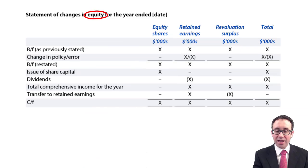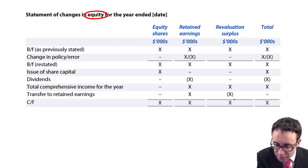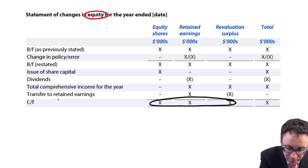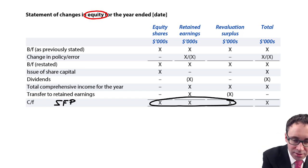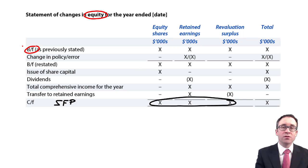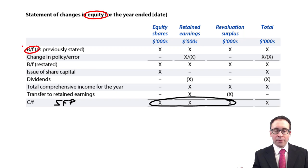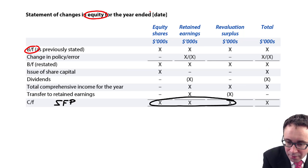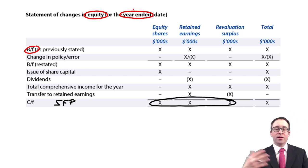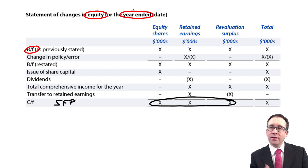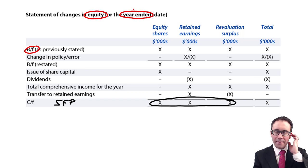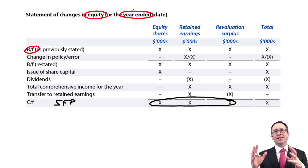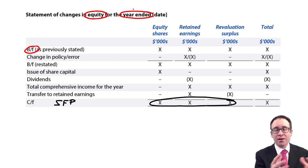What we're looking at in the statement of changes in equity is how those figures we see on the statement of financial position have changed since the start of the year. When you're heading up your statement of changes in equity, remember it tells a story about how things have changed for the year ended at your reporting date — whether that's December, March, June, September, or whenever else it may be. It effectively just takes numbers from where we've seen them previously within our accounts.